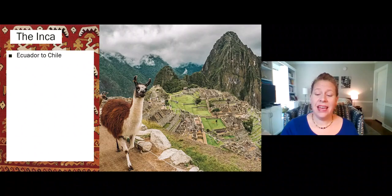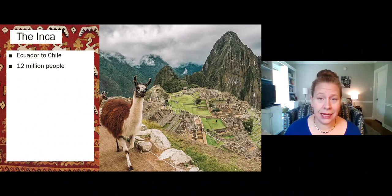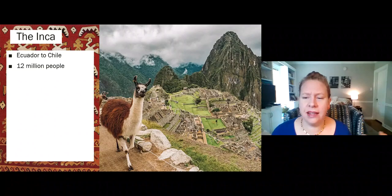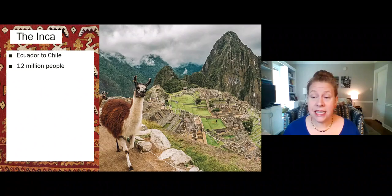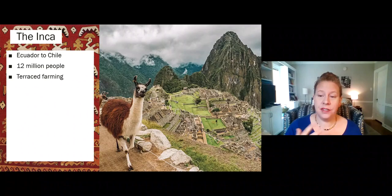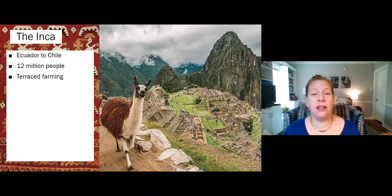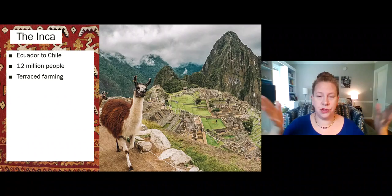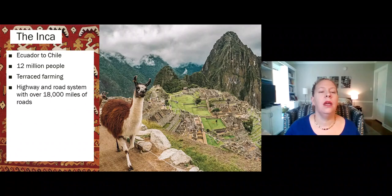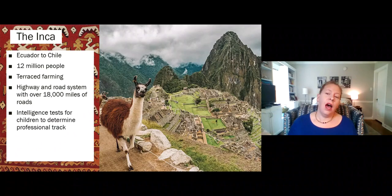Further south, in the Andes, we've got the Incas — living from Ecuador to Chile. It's actually a 12 million person empire, twice as large as the Aztecs. They tend to live up high in the mountains, which archaeologists believe was related to religion since it's a hard life. You have to control water, deal with thin air, and figure out how to farm up there. Much like Southeast Asia, the Incas were very into terraced farming to preserve soil and water. They had an extensive highway system — 18,000 miles of roads, many still in use.